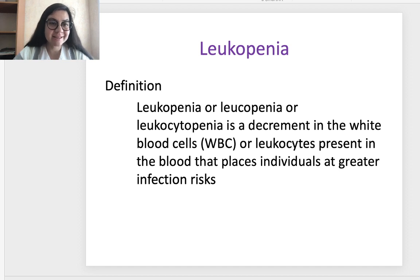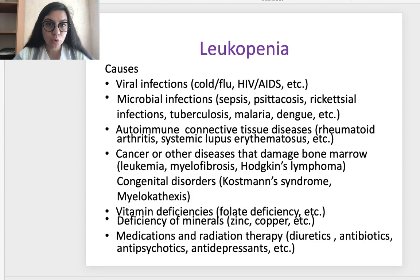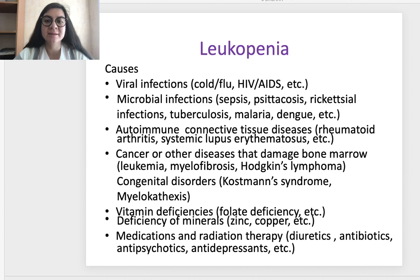The next syndrome is leukopenia — decreased level of white blood cells. Leukopenia is a decrease in white blood cells or leukocytes in the blood, placing individuals at greater infection risk. Causes include viral infections such as the common cold, flu, HIV/AIDS, and many other viral infections; microbial infections such as sepsis, psittacosis, rickettsial infections, tuberculosis, malaria, and dengue.